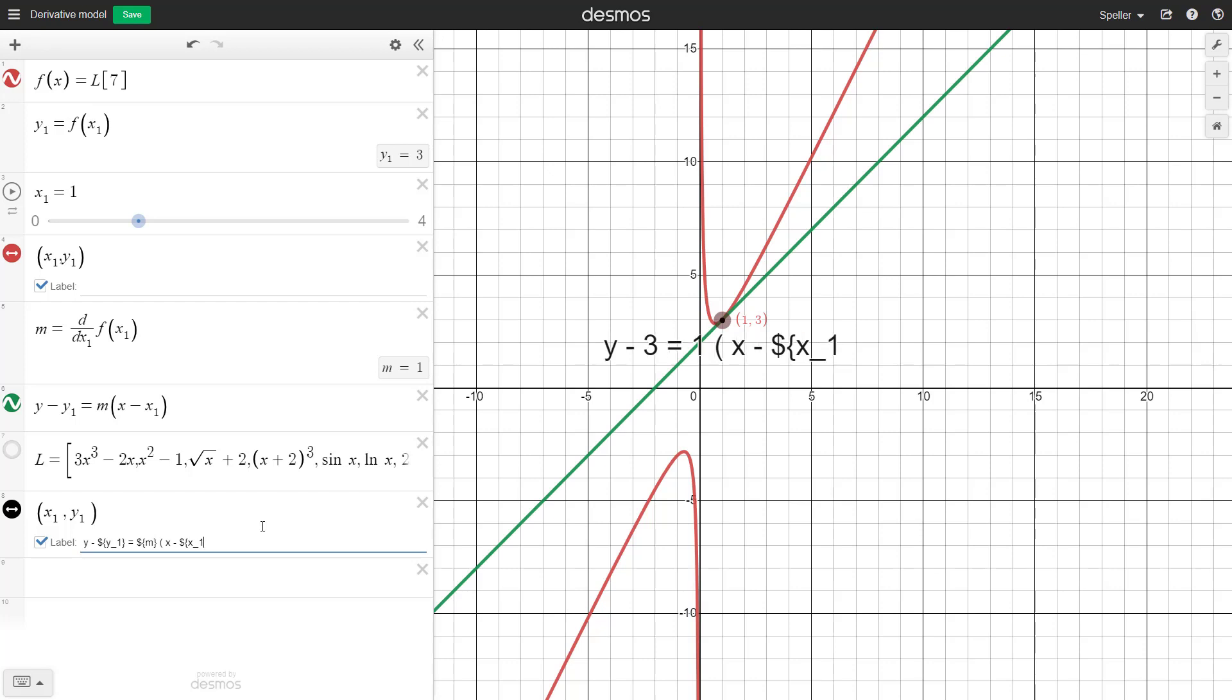Then I'll close that off with a regular parenthesis. Here we see X sub 1 is showing 1, and we know that from the point.